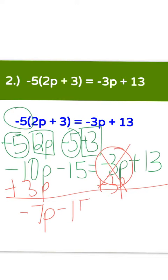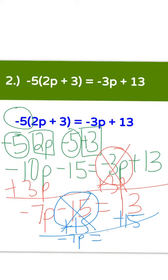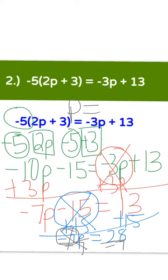Bring down everything else: negative 15 equals positive 13. Now get rid of the constant, negative 15, by adding 15 to both sides. That cancels out the minus 15 and leaves us with negative 7p equals positive 13 plus positive 15 — add and keep — positive 28. Now divide by negative 7 to get rid of the coefficient. That leaves p equals — positive divided by negative is negative, and 28 divided by 7 is 4. Your answer is p equals negative 4.